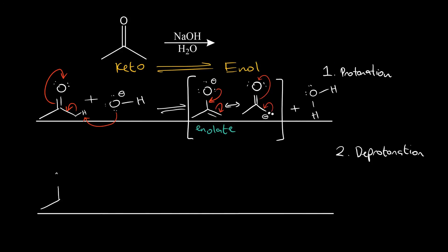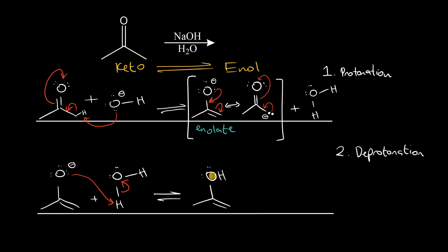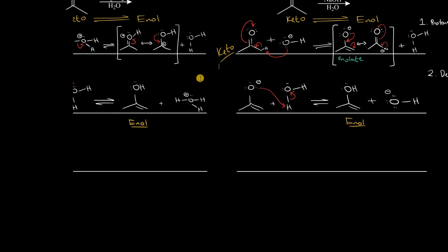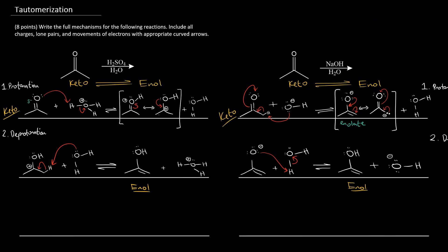The conjugate acid of hydroxide — water — acts as an acid here and protonates the enolate oxygen. The negatively charged oxygen is the nucleophile and attacks the proton. As a result, we form the enol and regenerate hydroxide. So these are the mechanisms for keto-to-enol tautomerization both in acid and in base, starting with acetone and ending with acetone enol.